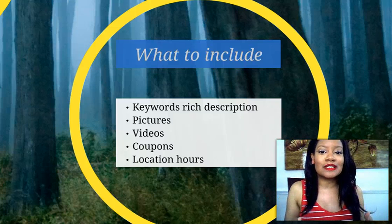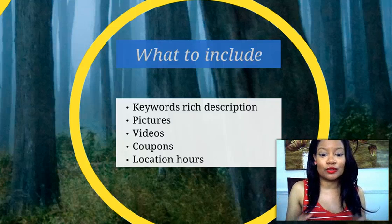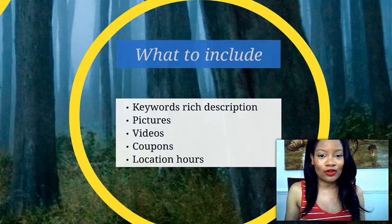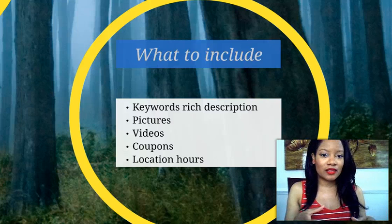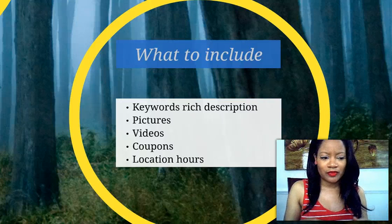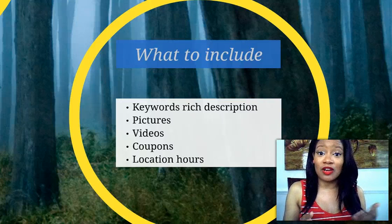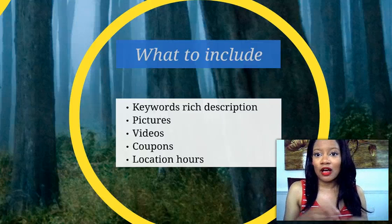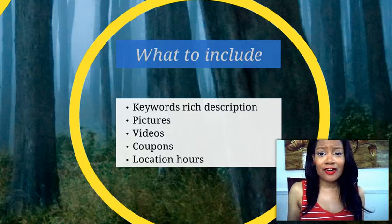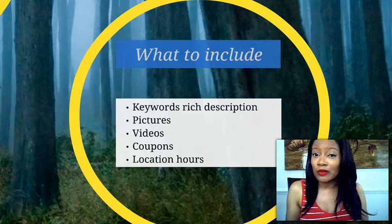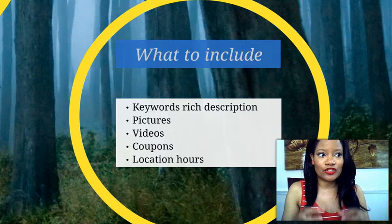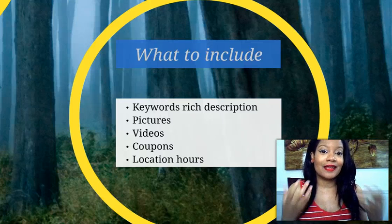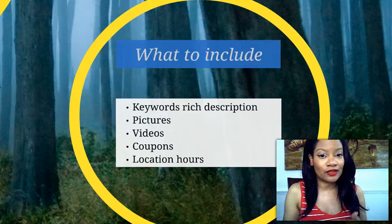When you do your listing, there's a couple of things I want you to include. You want to make sure your keywords are rich in the description. What that means is you want to think like your prospective customer. What are some of the keywords they would use to try to find someone? If they are looking for a local carryout and they're on their phone, they may put the zip code and maybe carryout or takeout food. Think about those keywords associated with that industry and make sure to put that in your description.